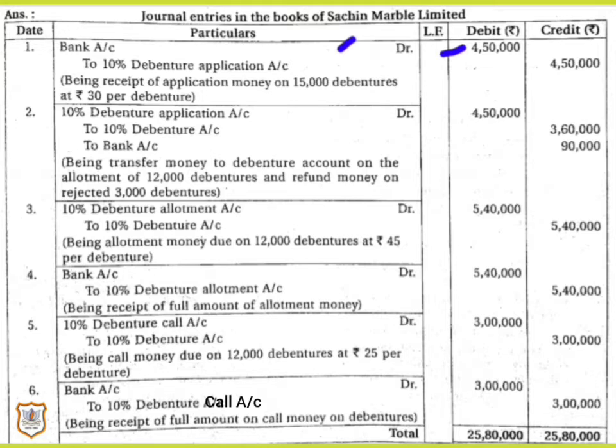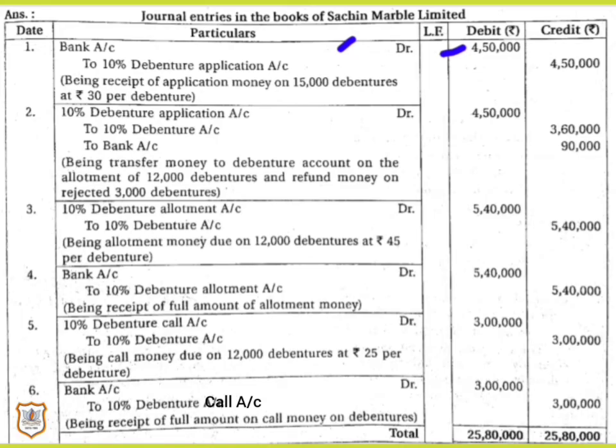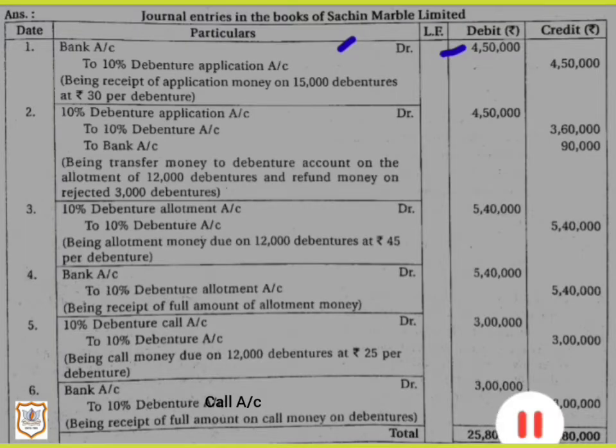Here, 10% is the name of the debenture, which is why we write '10% Debenture Application Account.' This is because a company can have many different debentures at the same time — for example, a 5% debenture or 6% debenture — so it is necessary to name each debenture.